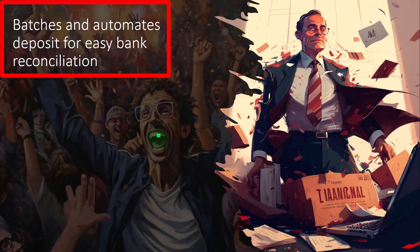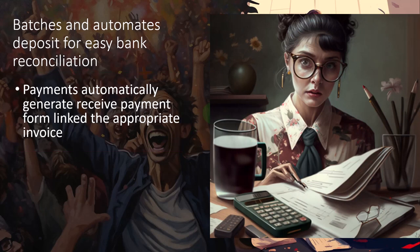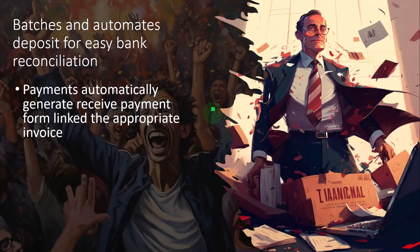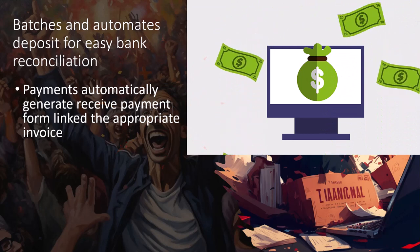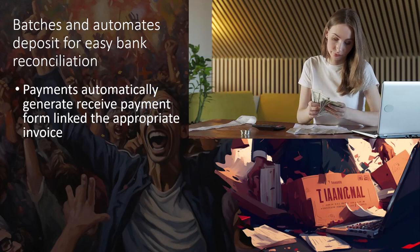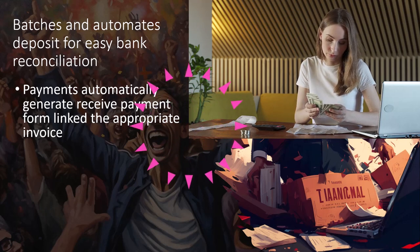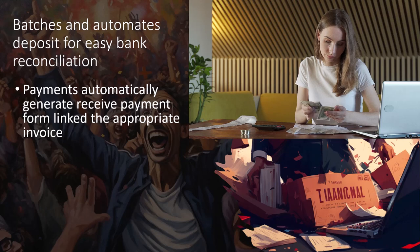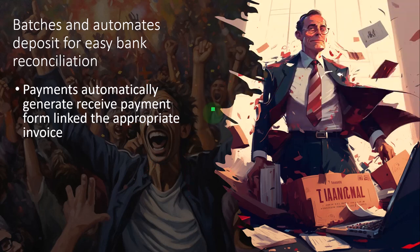Next is batching and automating deposits for easy bank reconciliation. We're sending out invoices via email with multiple ways to pay through the link. Because we're using the banking services within QuickBooks — QuickBooks Payments essentially gives us a banking facility like a checking account — we can track the accounts receivable, and when they pay us, the QuickBooks Payments system can track that payment. Payments automatically generate a receive payment form linked to the appropriate invoice.